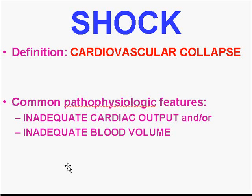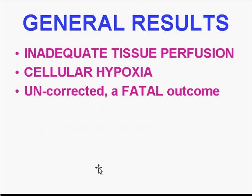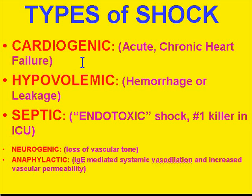The common pathophysiologic features of shock — whether due to the heart, blood vessels, or overwhelming sepsis — are either inadequate cardiac output or inadequate blood volume, resulting in total body inadequate tissue perfusion, inadequate perfusion of vital organs, cellular hypoxia, and ultimately death. Shock has a high mortality, and total body inadequate perfusion is almost certainly fatal unless corrected only in the very early stages. In the latest stage there is nothing you can do.